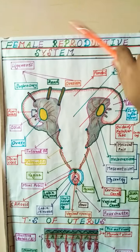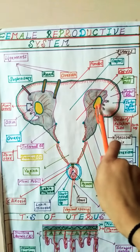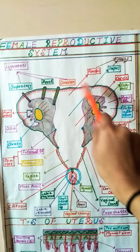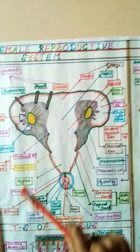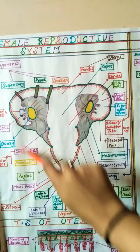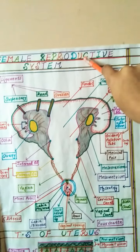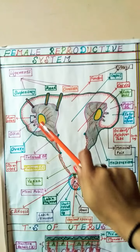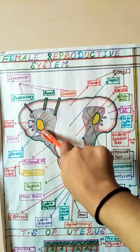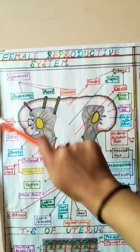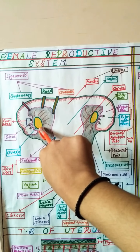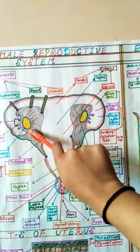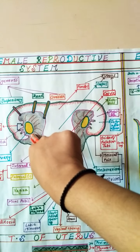The organs of the female reproductive system include the paired ovaries, fallopian tubes, uterus, vagina, and external genitalia. The paired ovaries are situated at the lower portion of the abdomen and are very important organs because these are the primary sex organs — the site where the egg is produced inside the female.